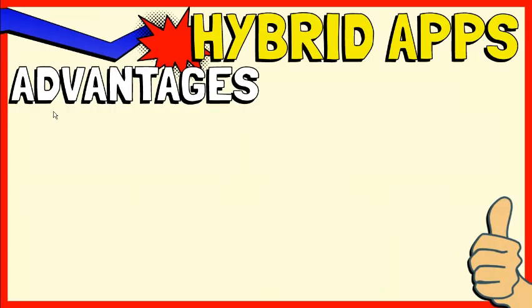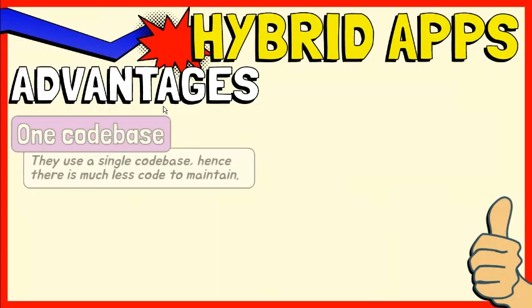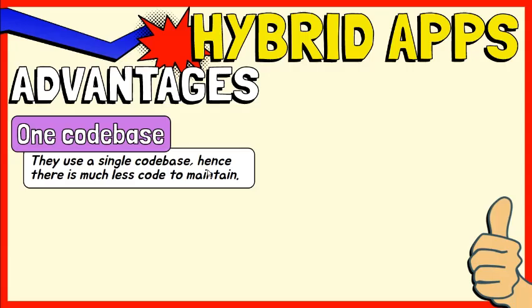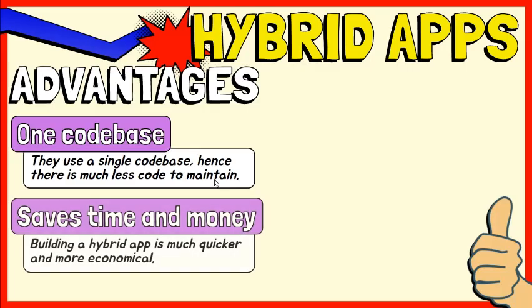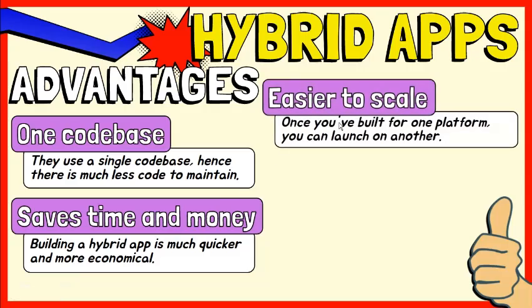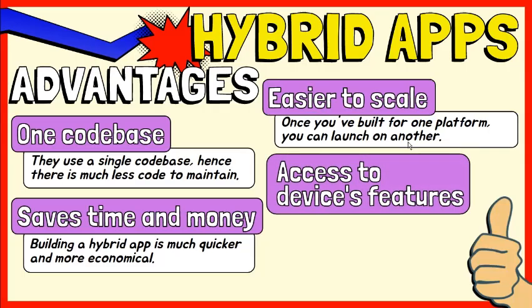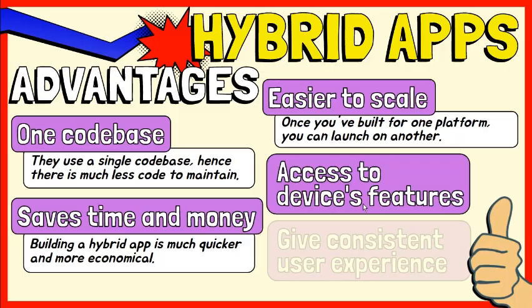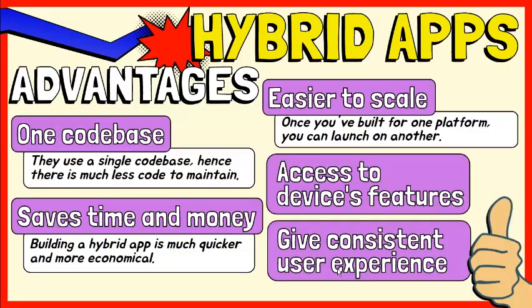Let's view the advantages of hybrid apps. There is one code base to manage, hence there is much less code to maintain. Building a hybrid app is much quicker and more economical than a native app. Once you've built for one platform, you can launch on another. Just like in the native app, the device's features like Bluetooth, phone book contacts, camera roll, NFC, and more can be accessed. Hybrid apps load rapidly and give a consistent user experience.